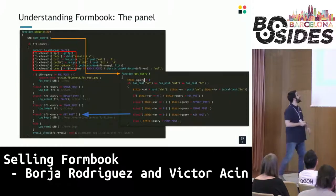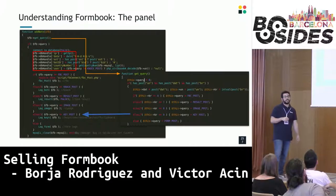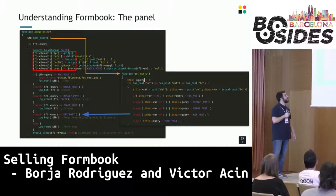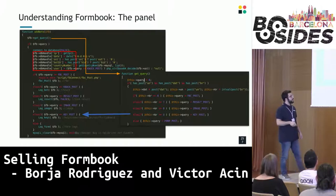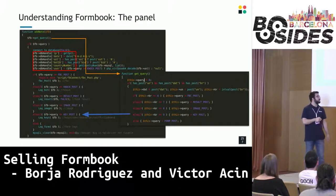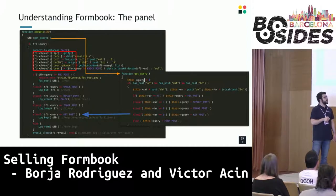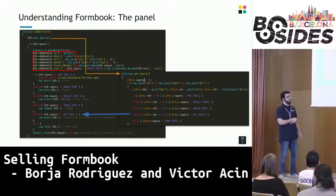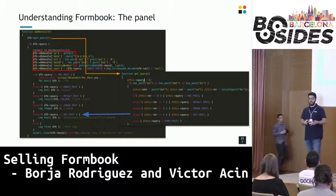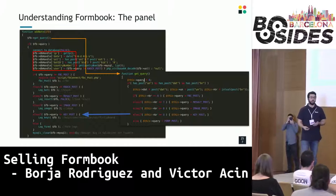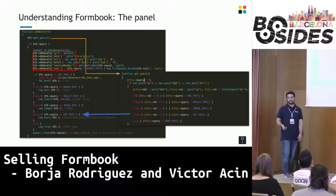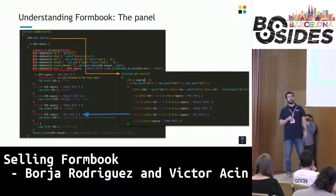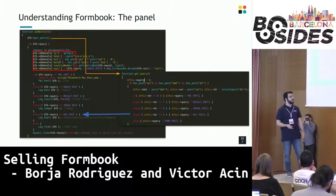To exfiltrate information, Formbook identifies every packet with a string indicating the software affected and the type of information being exfiltrated. It encrypts this data and puts it inside the parameter, followed by the username in Base64 and an integer parameter identifying the type of information. Looking at the panel source code, when the 'br' parameter equals 9, it calls a function called 'log_keys' used to exfiltrate keystrokes, recovery data, passwords, and similar information. Every packet sent to the C2 also collects the IP, bot ID, and other relevant information.